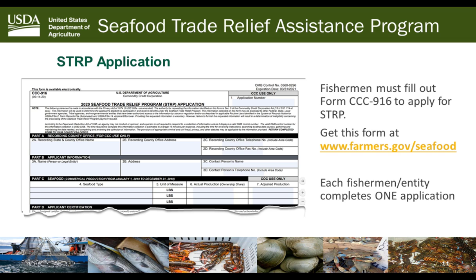If you had multiple species — say crabs and salmon — you put them all on one application form. If you have more than three species, get an additional form and submit them all at once. In the system it will appear as one form showing each specific seafood type and the pounds associated with it.